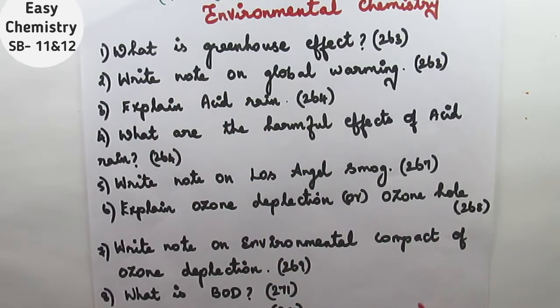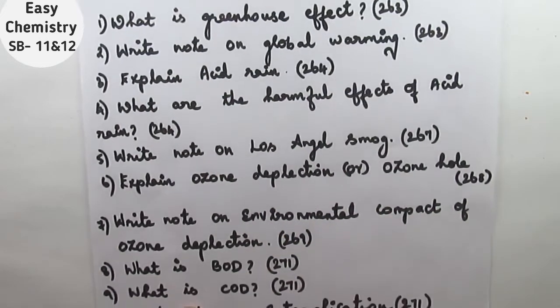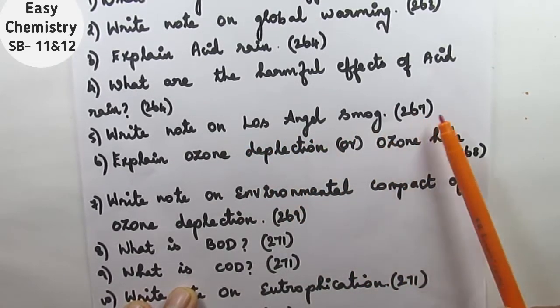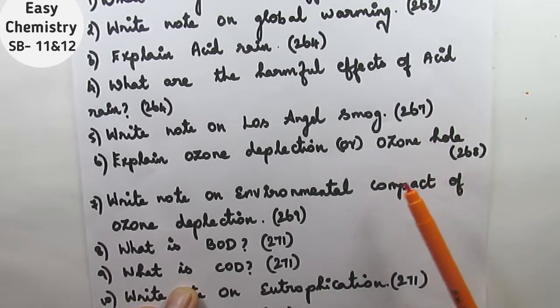Question number four, what are the harmful effects of acid rain? Question number five, write note on Los Angeles smog. This is on page number 267. When you study from the textbook, that is a primary source, that is a good source.